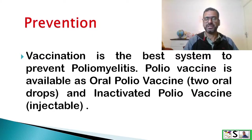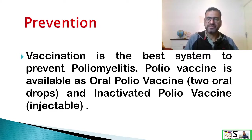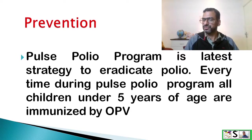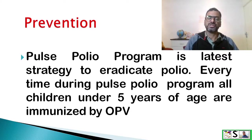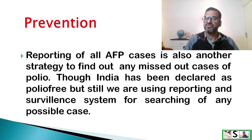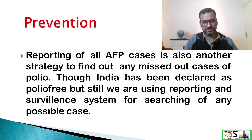For prevention, vaccination is the best strategy. Polio vaccine is available in two forms: oral polio vaccine, where two oral drops are given, and inactivated polio vaccine, which is injectable. Pulse polio program is the latest strategy to eradicate polio. Every time during the pulse polio program, all children under 5 years of age are immunized by oral polio vaccine. Reporting of all AFP cases — asymmetrical flaccid paralysis — is also a strategy to find any missed cases of polio.